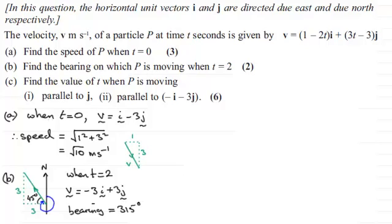Now we move on to the next part, part c. So we'll just come down here. And for the first part of c, we've got to find the value of t when p is moving parallel to the vector j. Well if it's moving parallel to the vector j, I would expect the velocity to be something j. In other words, there'll be no i component. So the i component must be 0. So let's just put that here that the i component must equal 0.